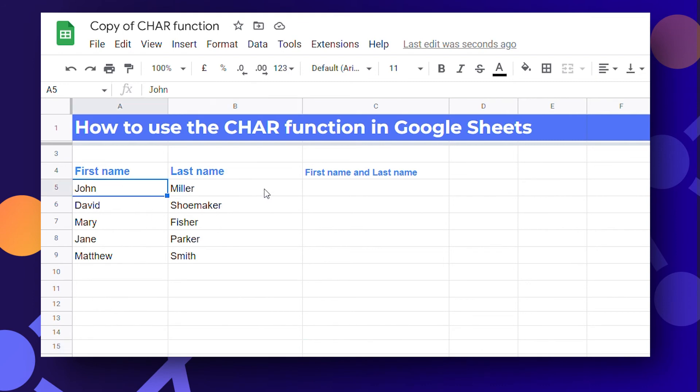We are going to add a space which is also a character in between first and last name. Write equals to and then select the first name and between ampersand sign write char 32 and then select the last name. The first name and the last name are merged and placed in a single cell.